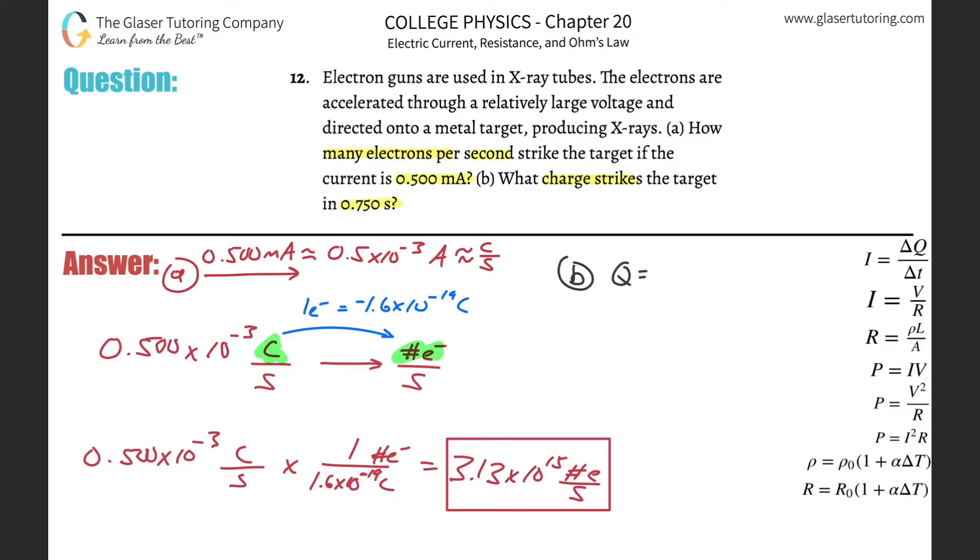So we want to find Q, the charge. We want to find, we know the time that this gun is firing, I guess, 0.750 seconds. And we know the current. So current is I. Now remember, we already converted this into amps. That's 0.5 times 10 to the minus 3. Remember, this is amps, or in other words, it's coulombs, the number of coulombs per second, or the amount of charge per second.